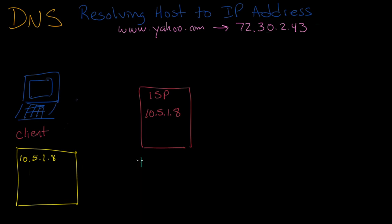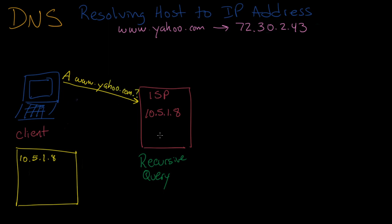Your ISP has a DNS server which is going to act on your behalf to do DNS lookups for you. This is called a recursive query. You're going to issue a request to the ISP, and the ISP is going to in turn reissue that request to other DNS servers in order to get the answer for you. So your client computer starts out by issuing a request to the ISP and asks a simple question: what is the address for www.yahoo.com?